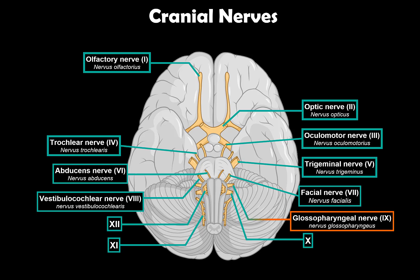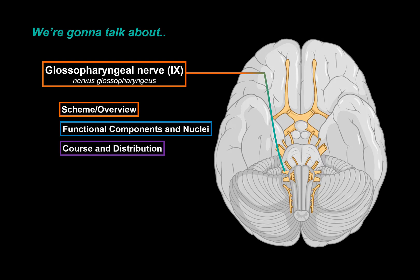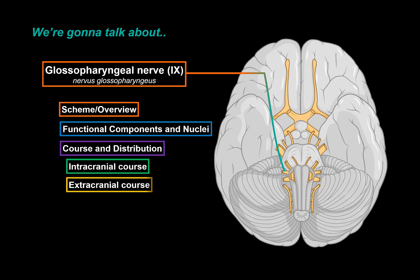We will do that by first making a quick scheme of the glossopharyngeal nerve pathway. Then we will break down the functional components along with their respective nuclei in the medulla. We will go through the course and distribution by going through its intracranial course first, then the extracranial course and its branches.